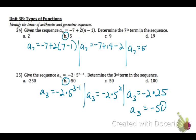At number 24, we're given the sequence that a sub n equals negative 7 plus 2 times n minus 1. So we're going to determine the 7th term in the sequence. So we're going to plug in 7 everywhere we see n. So a sub 7 equals negative 7 plus 2 times the quantity 7 minus 1. Then on the right side, we're going to distribute the 2. So we'll get negative 7 plus 14 minus 2. And then if we just do that math, a sub 7, the 7th term equals 5, which is choice B.